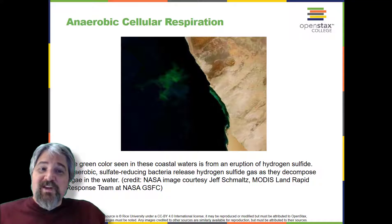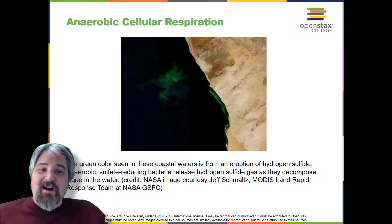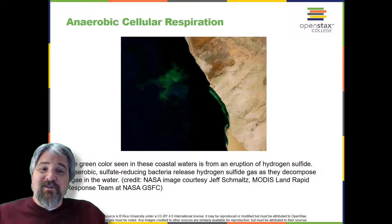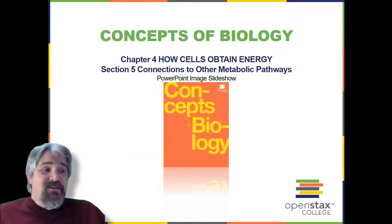The various methods of fermentation are used by different organisms to ensure an adequate supply of NAD+ for the sixth step in glycolysis. Without these pathways, that step would not occur and no ATP would be harvested from the breakdown of glucose. And that brings us to the end of Section 4, Fermentation.